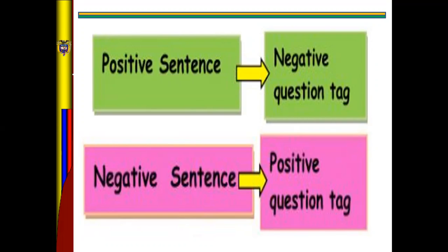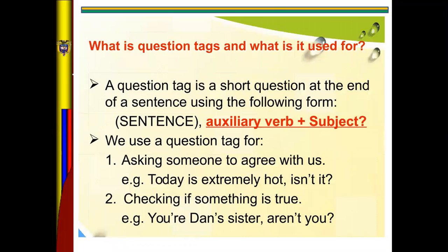What is the question tag and what do we use it for? A question tag is a short question at the end of the sentence, using the following form: auxiliary verb plus subject plus question mark. We use a question tag for asking someone to agree with us — for example, 'Today is extremely hot, isn't it?' — or for checking if something is true — for example, 'You are her sister...'